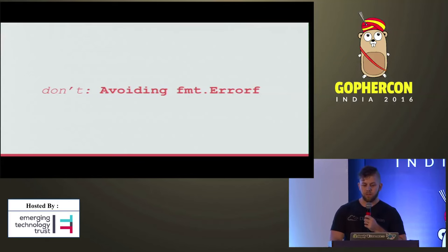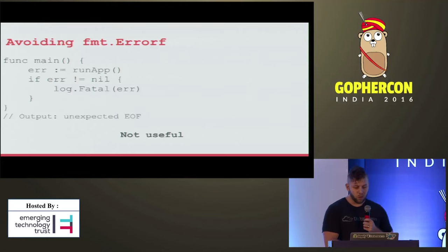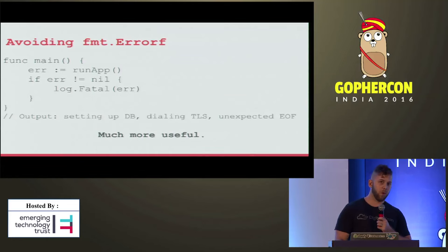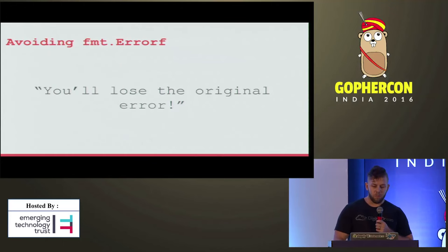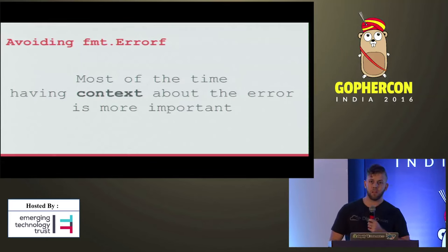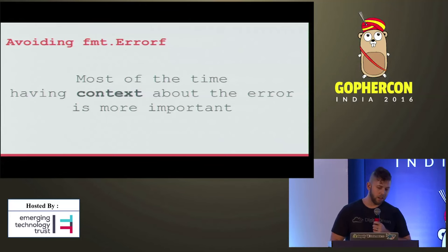Avoiding pkg/errors. A lot of people are saying that every time you use pkg/errors, you're hiding the original error. So when you don't use it and you just return straight up the error that you get, in the end, if you log your error, you lose context about what happened. Say you receive an unexpected EOF - that's not very useful. This is much more useful if you bubbled up your error with pkg/errors. You lose the original error, but most of the time the context where your error happened is more important. And in some cases you'll figure out that you actually care about the original error, and then you can refactor that.